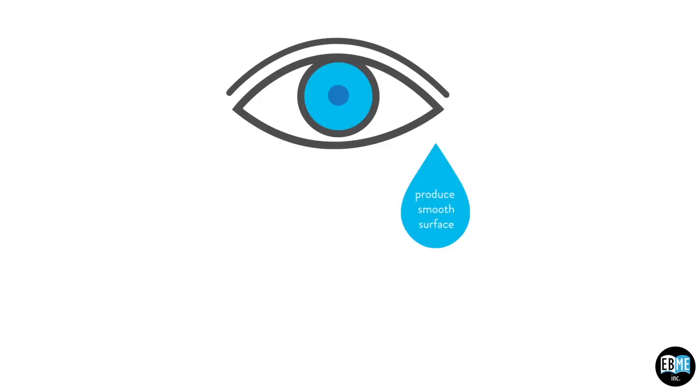Tears produce a smooth surface to allow for clear vision, they provide oxygen and other nutrients to the surface of the eye, and contain proteins such as immunoglobulins, lysozyme, and lactoferrin, which all help ward off infection.